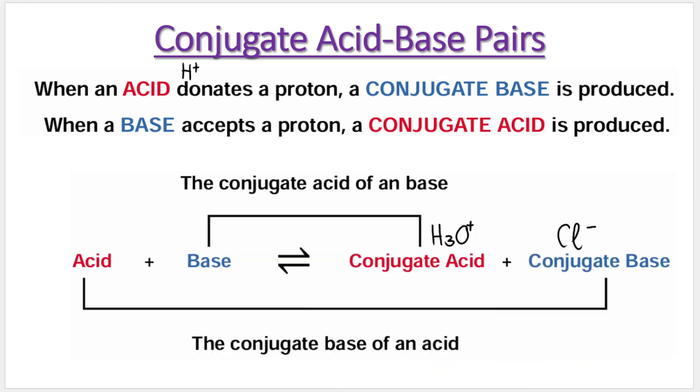So what's left over is what we call a conjugate base. In this example, HCl donated a proton, it became Cl-, that's the leftover piece once it gave away the proton, and we call that the conjugate base. So acid, conjugate base, that's one pair.